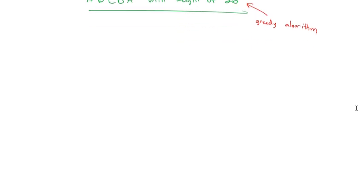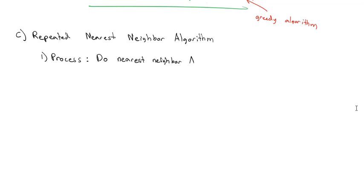So we're going to attempt to fix this greedy algorithm by saying, instead of starting at A, let's consider we could have started at any point and done the same thing. This is what's called the repeated nearest neighbor algorithm. And its process is we're going to do the nearest neighbor algorithm for each vertex, and then we can select the smallest weight.